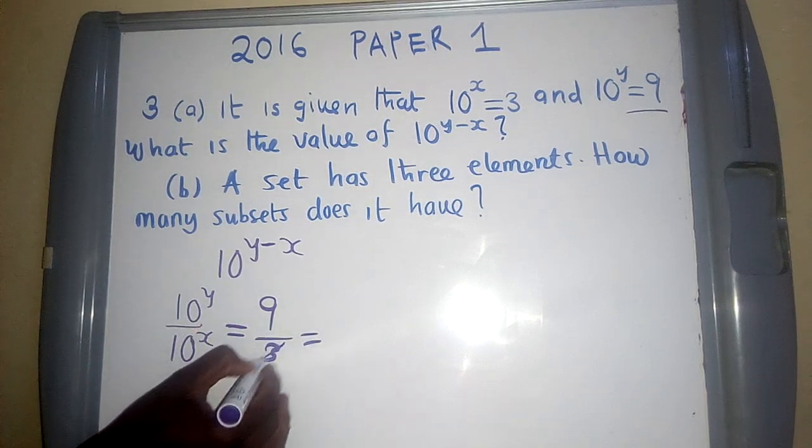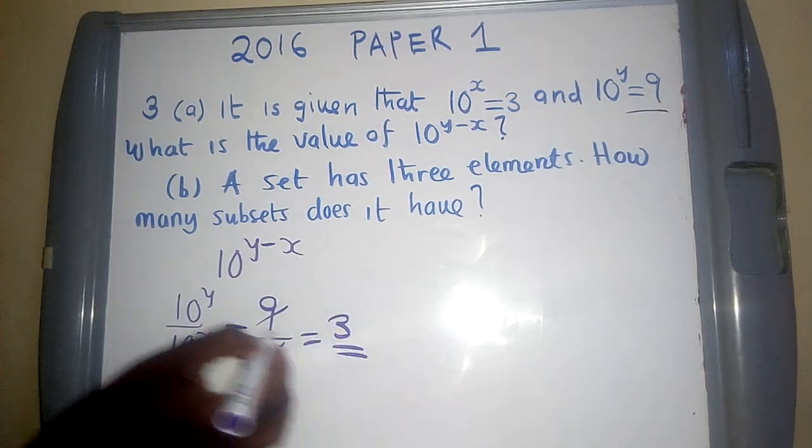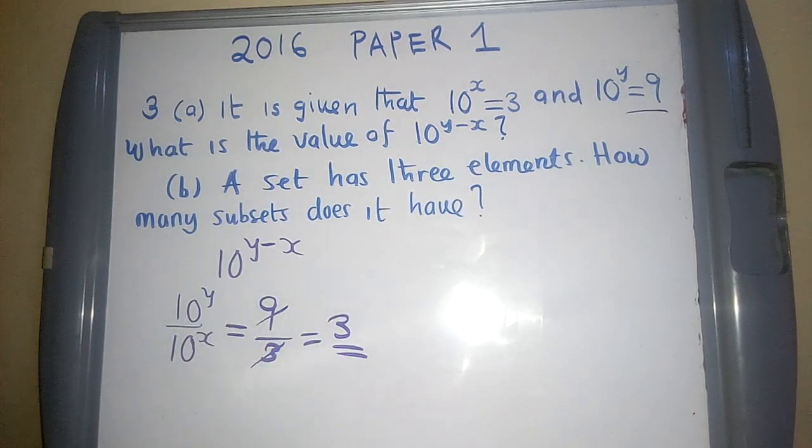Then to finish this up, we will say 9 divided by 3 is equal to 3. This is our solution. So in the next video, we answer question B.